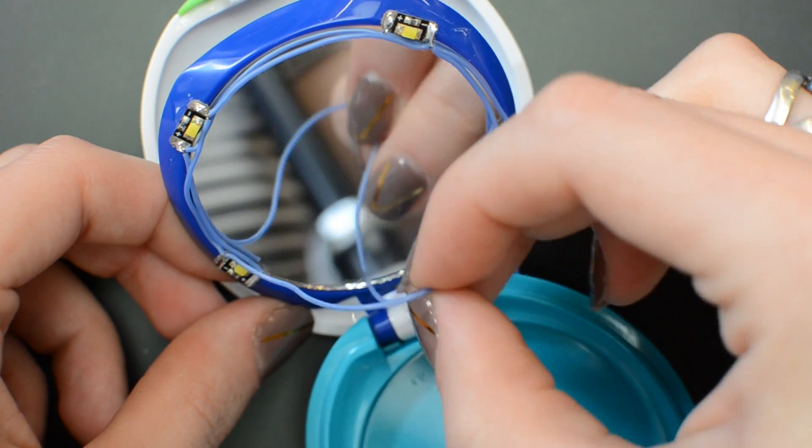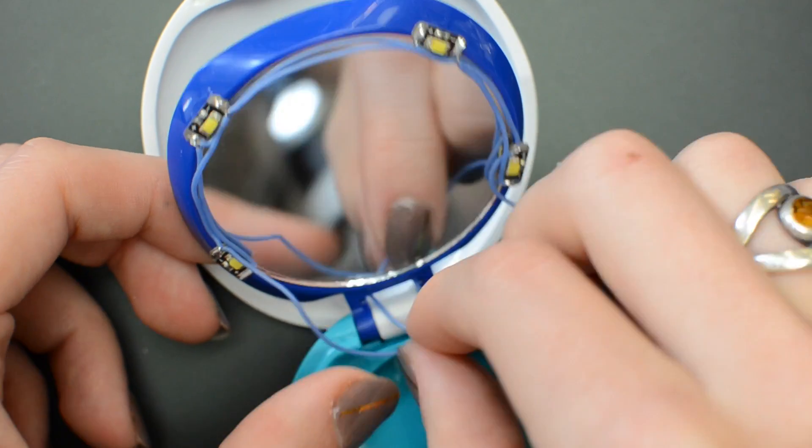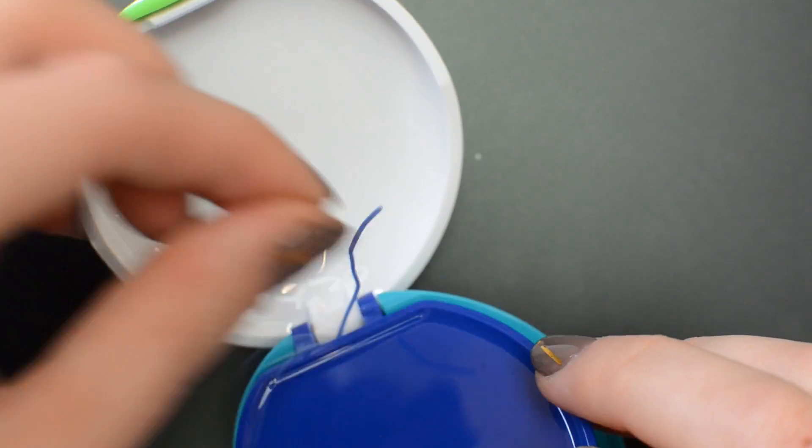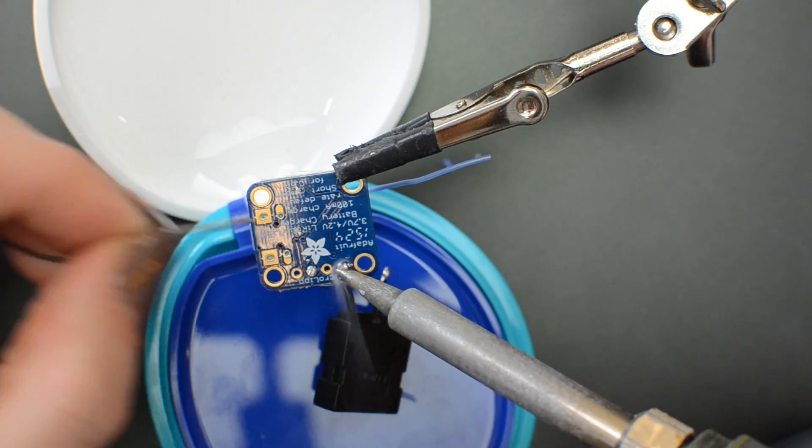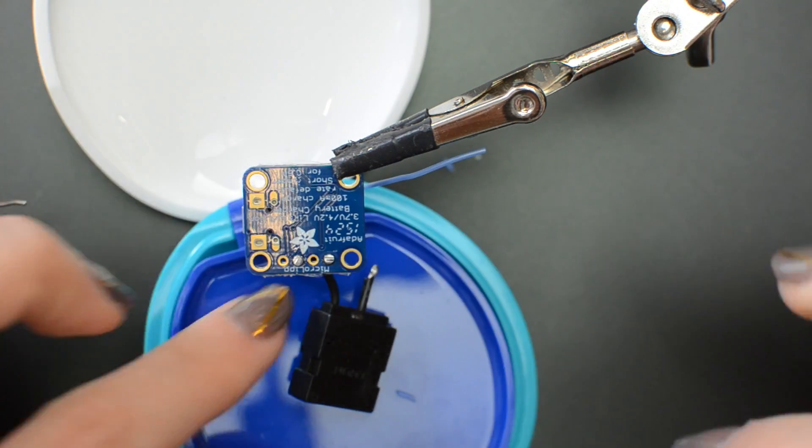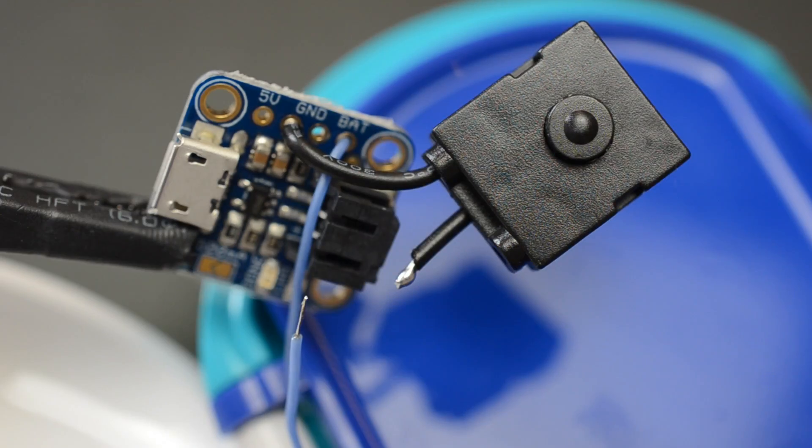Thread the two loose wires through the hinge to the other side of the mirror, where the positive wire is soldered to the BAT connection on the circuit board, and the negative wire gets a bit of heat shrink before being soldered to the second switch lead.